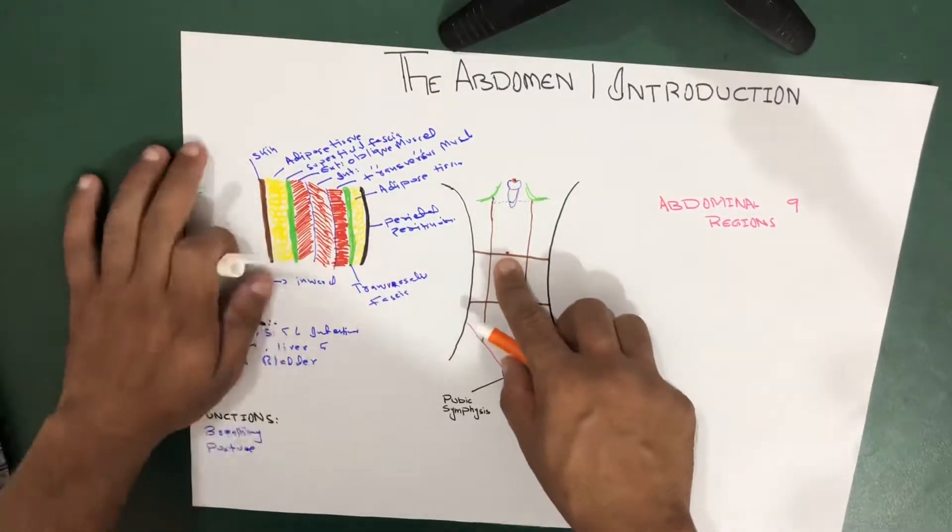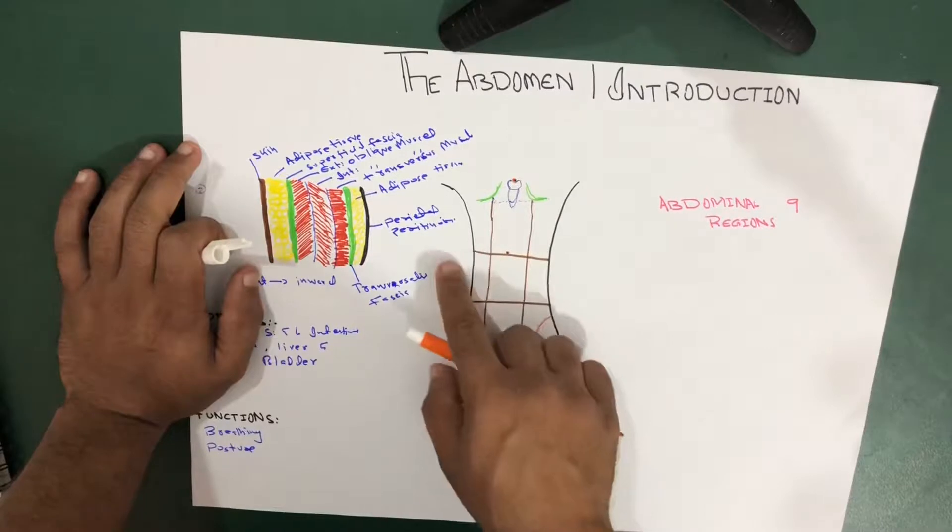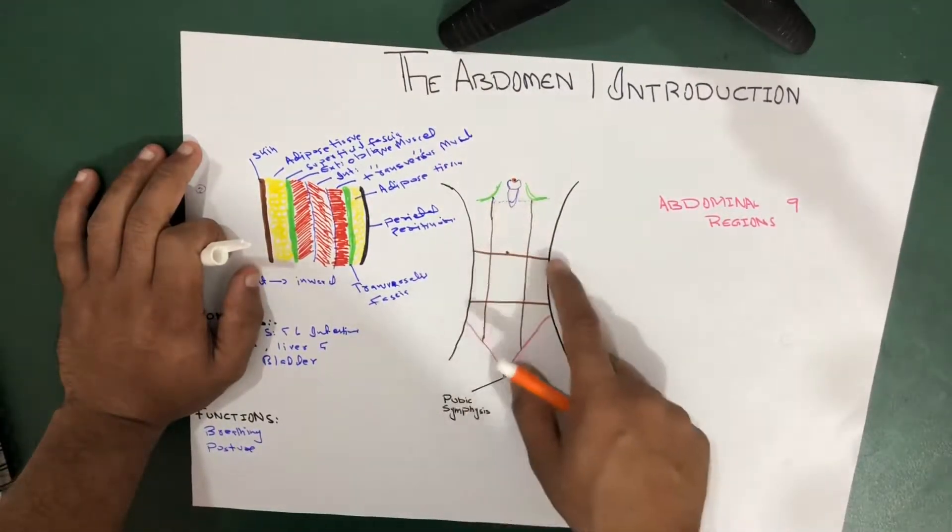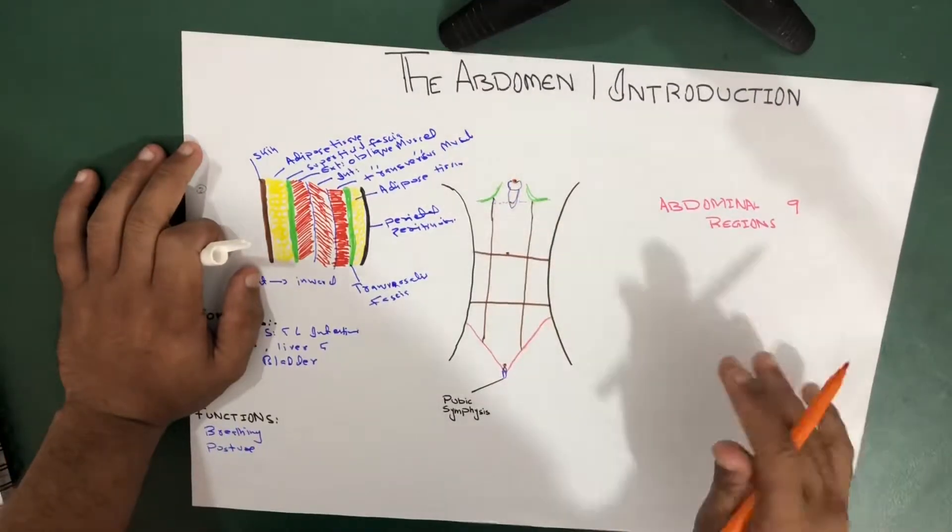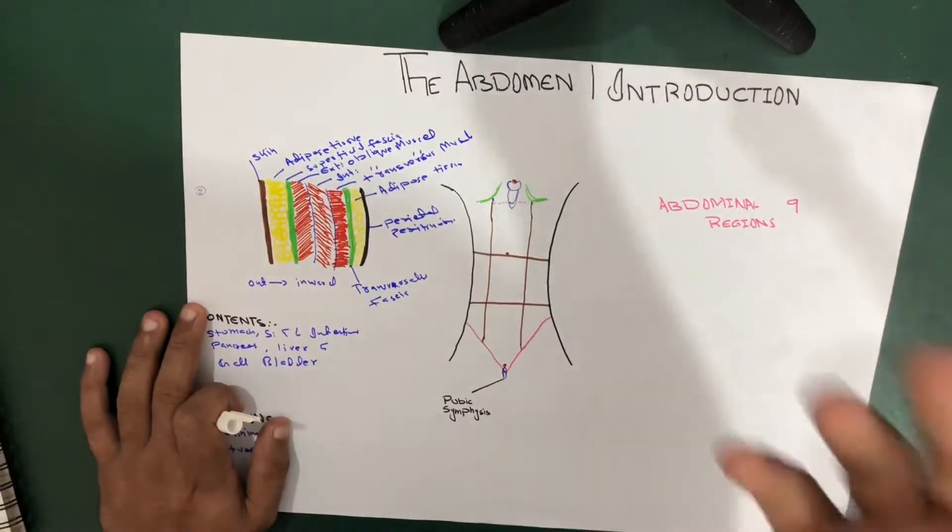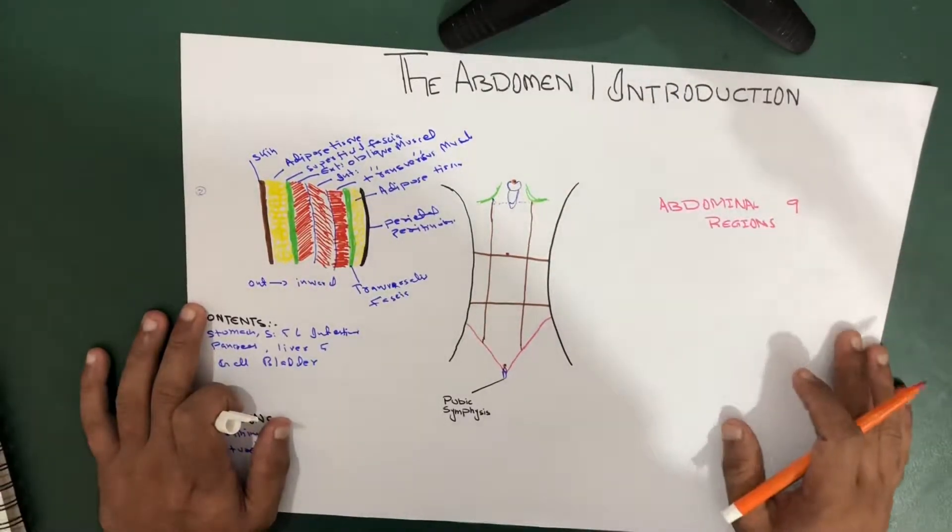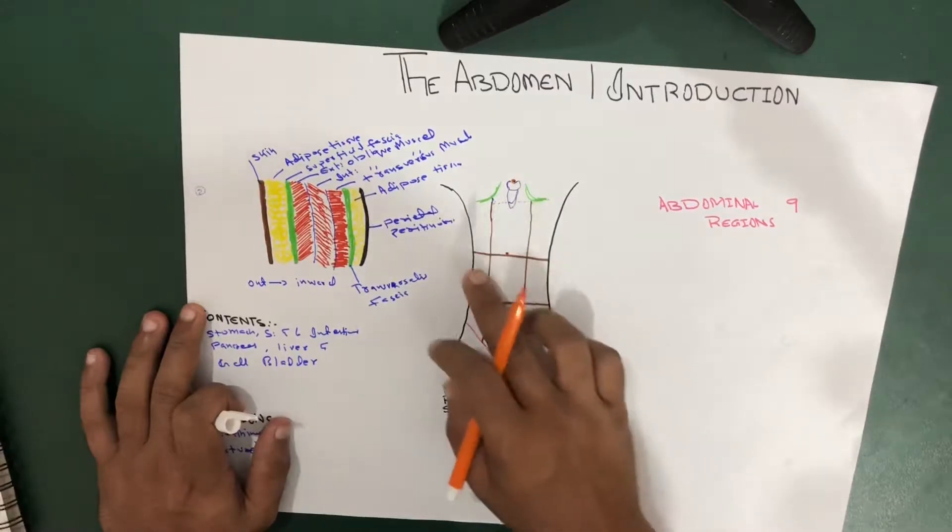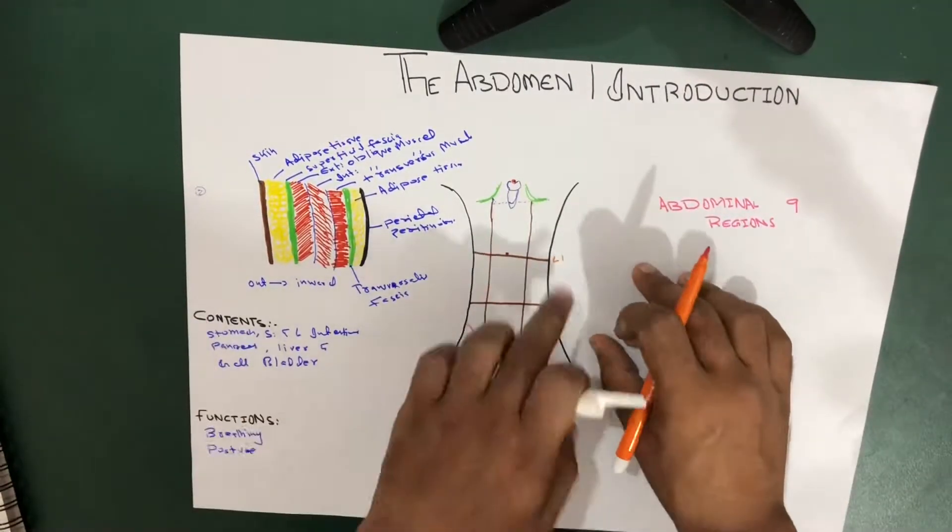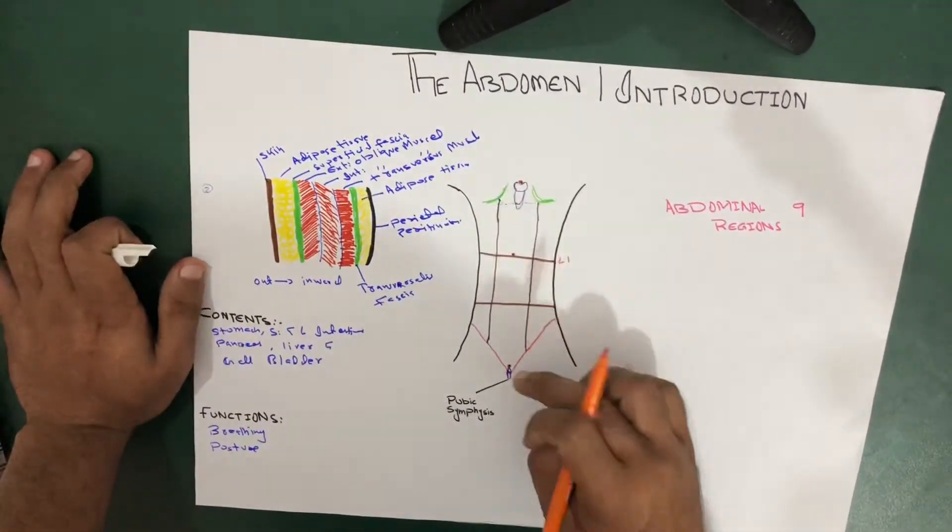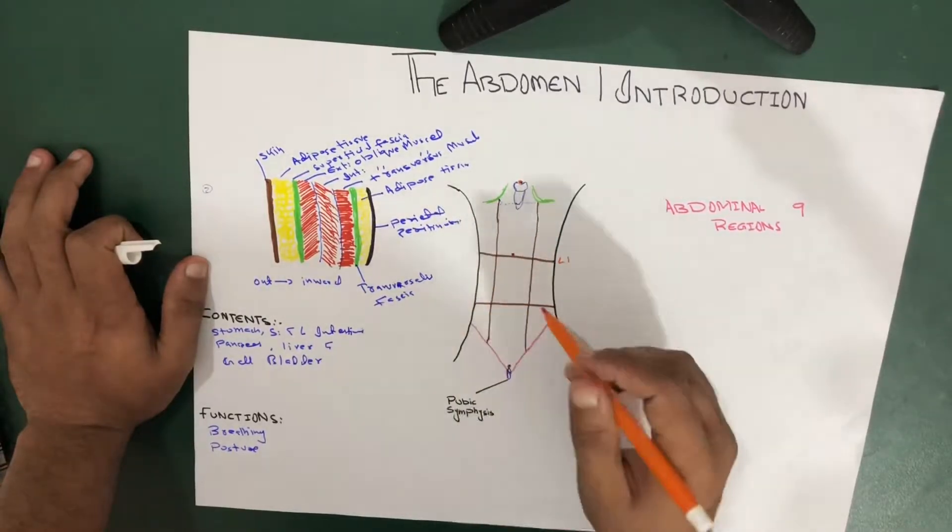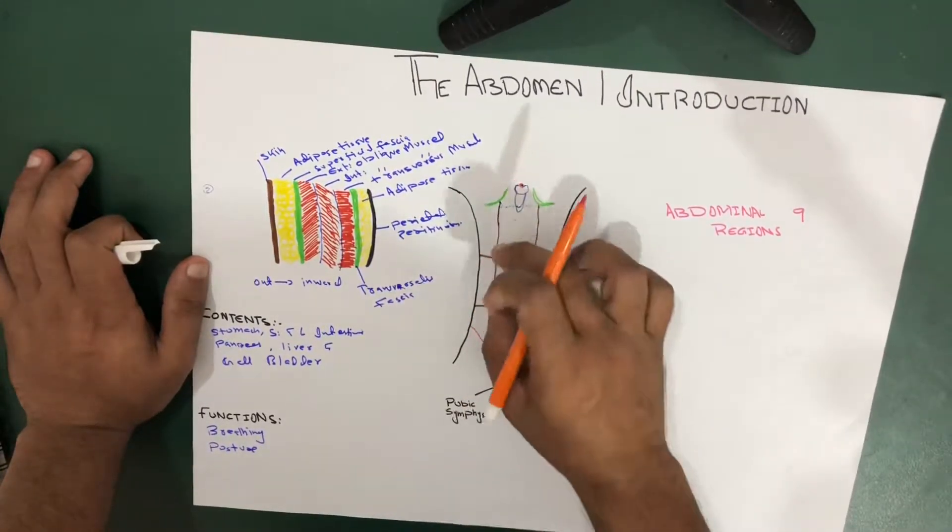So this dot actually helps in creating this horizontal line. So this horizontal line, or you can say horizontal plane, is also called the transpyloric plane, at this level, which is also at the level of L1. If you go to posterior, to the spine, it's at the level of L1. So in between these two lines, we got this point, so this is a transpyloric plane.